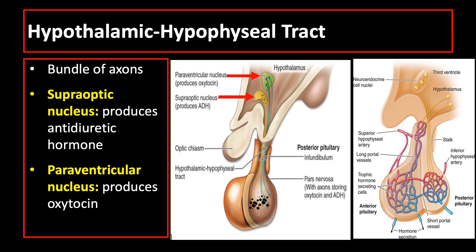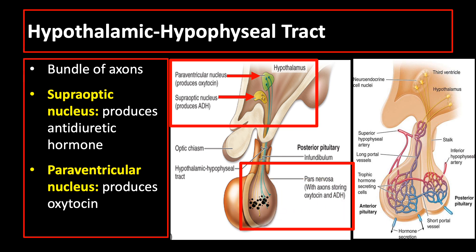Both hormones undergo axonal transport and accumulate temporarily in the axons of the hypothalamic-hypophysial tract before their release and uptake by capillaries branching from the inferior hypophysial arteries. It is important to emphasize that it is the hypothalamus that produces antidiuretic hormone and oxytocin. These two hormones are then transported to and stored in the posterior pituitary gland.